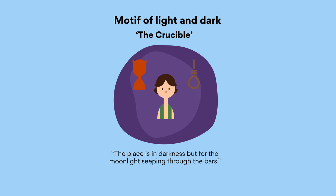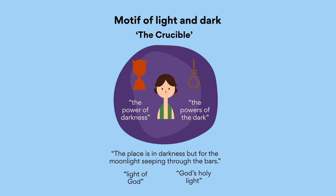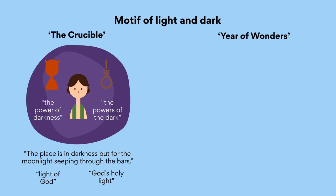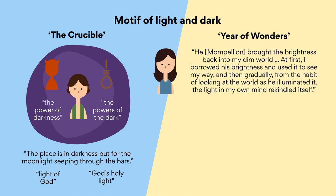In the play, darkness is also often used metaphorically when referring to evil and sin, as seen in the frequent use of phrases such as 'the power of darkness' and 'the powers of the dark.' Phrases such as 'light of God' and 'God's holy light' show how lightness is associated with purity. Brooks too employs the motifs of light and dark throughout her novel. In Year of Wonders, light is seen to bring clarity and hope, erasing the doubt and uneasiness of darkness. Eleanor comments that Mompellian 'brought the brightness back into my dim world. At first, I borrowed his brightness and used it to see my way, and then gradually, from the habit of looking at the world as he illuminated it, the light in my own mind rekindled itself.'